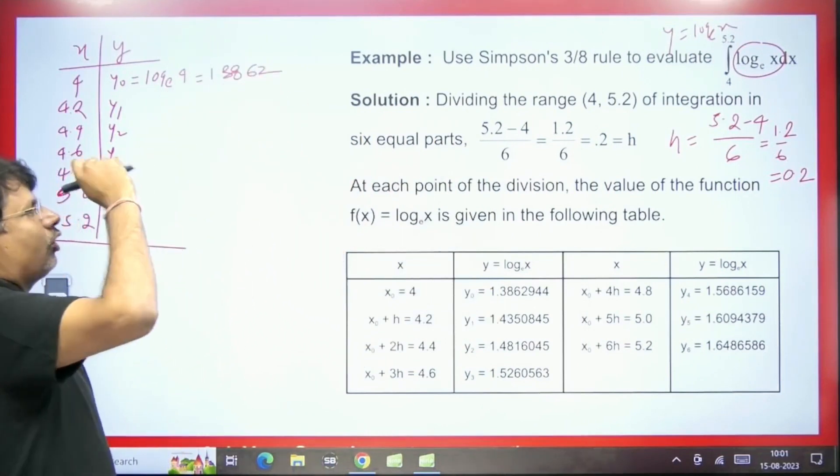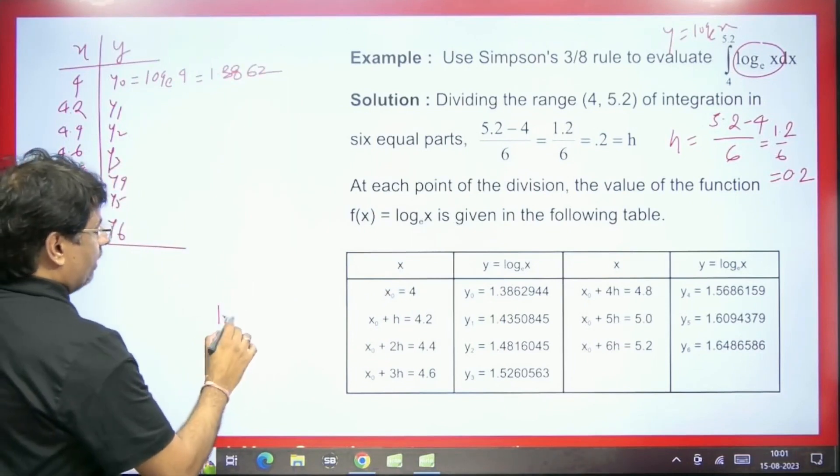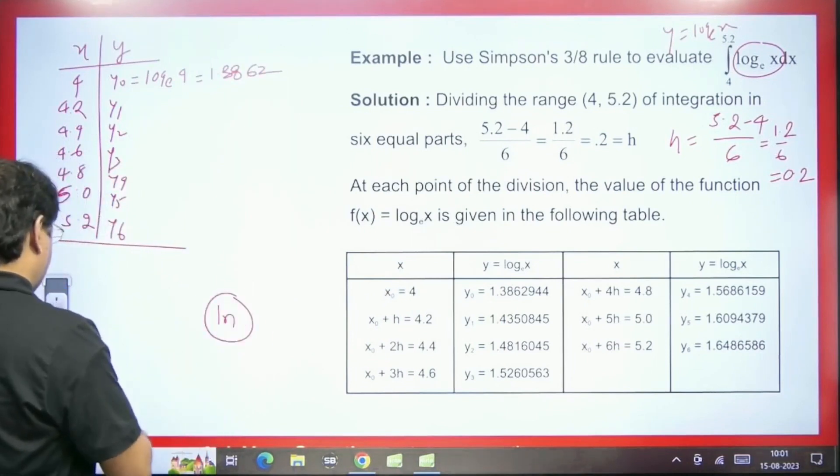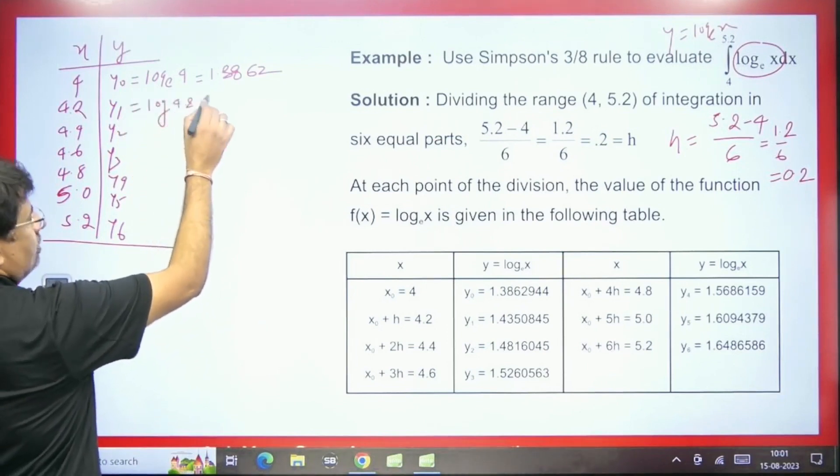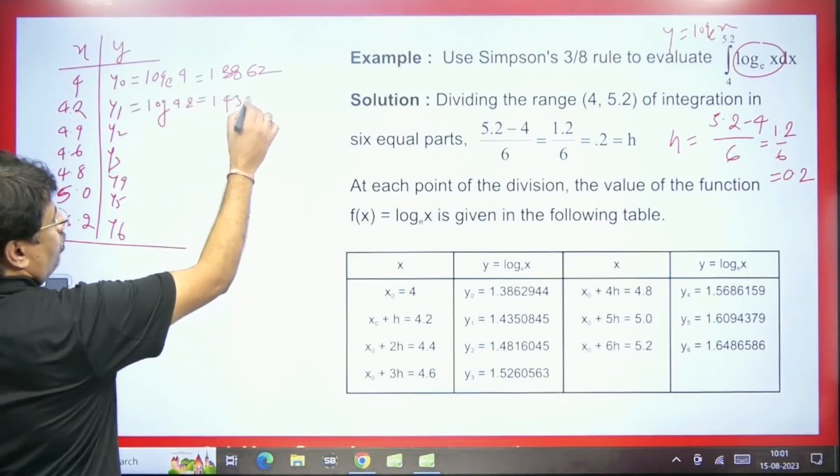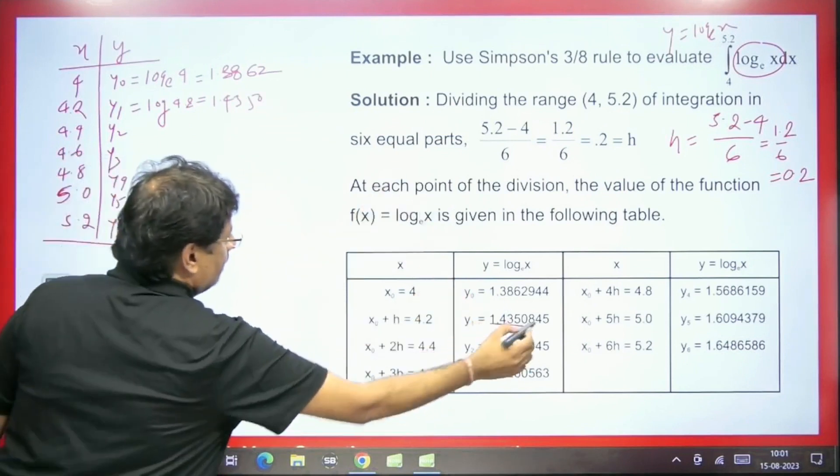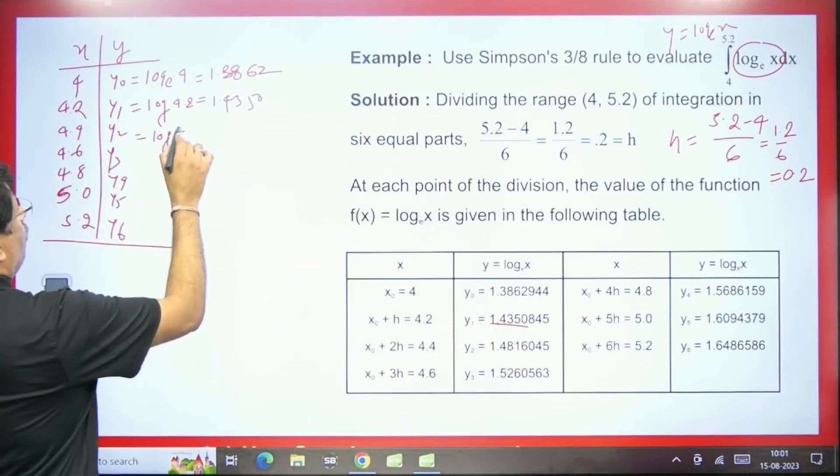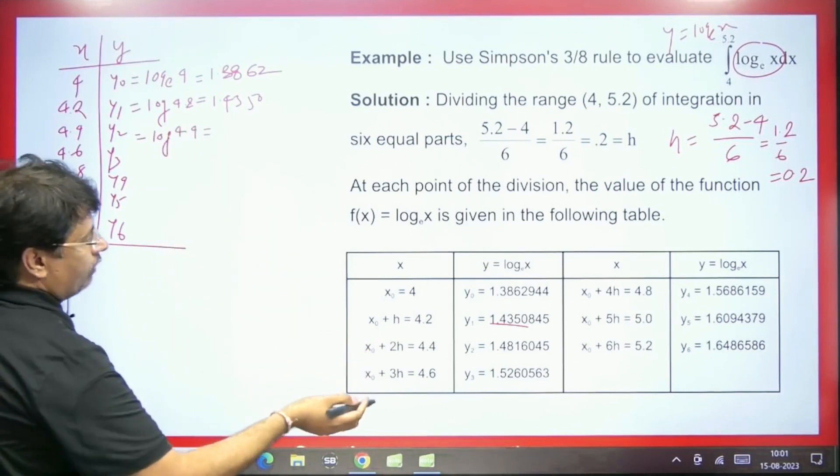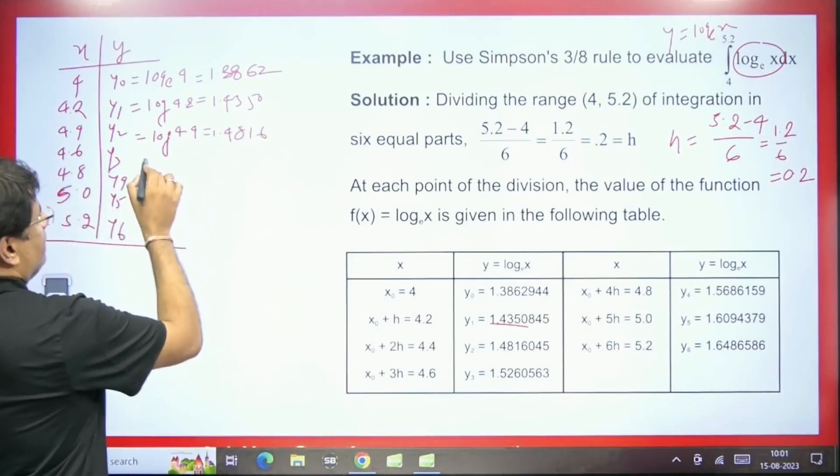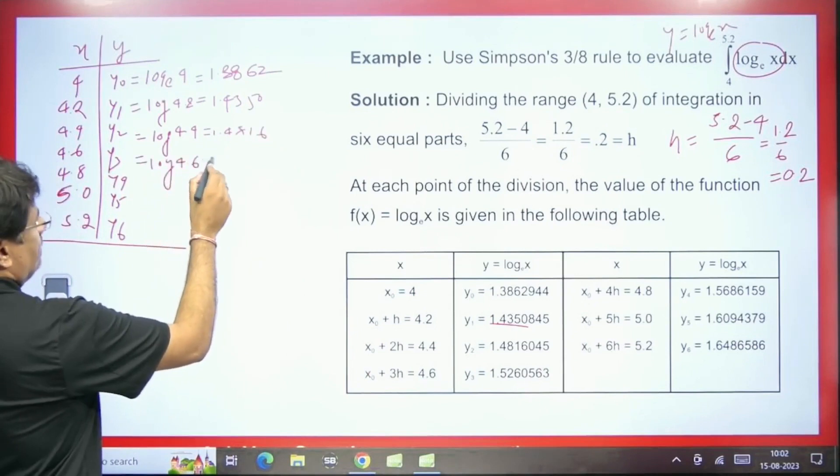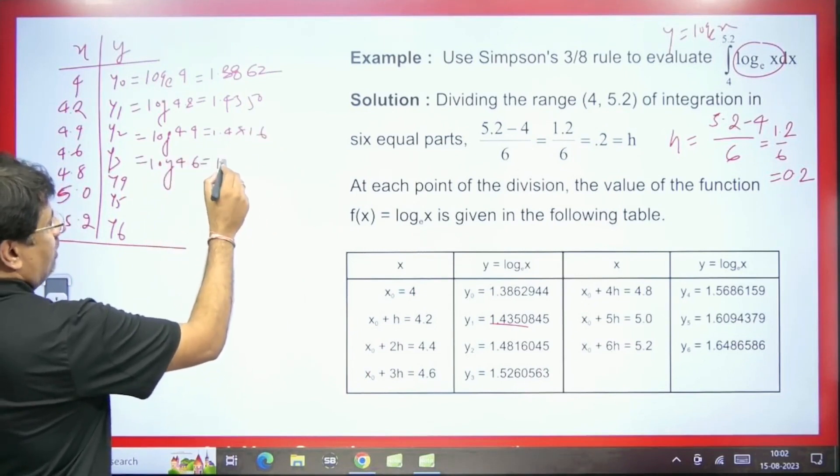So this is how it will come here. Now this is log 4.2 and its value will be 1.4350. In the same way, we will talk about log 4.4. The value that we are getting here is 1.4816. Similarly, we will get log 4.6 and the value of this will come as 1.5260.